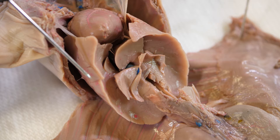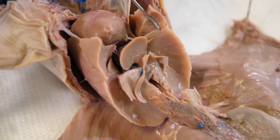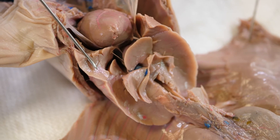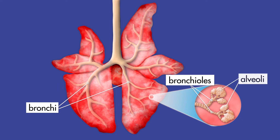Its lungs, which are much flatter than human lungs, are divided into lobes. The left lung has three lobes, and the right lung has four lobes. Inside the lungs, the bronchi divide into bronchioles, which end in tiny sacs called alveoli. Oxygen and carbon dioxide are exchanged through the walls of the alveoli.